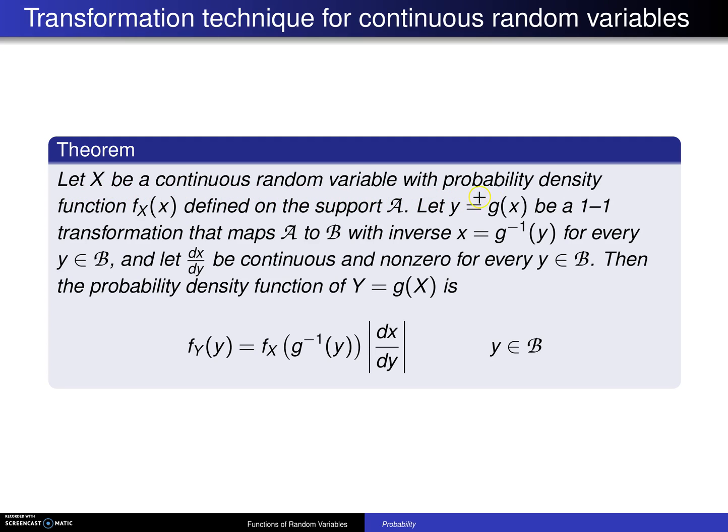Let X be a continuous random variable with probability density function f_X(x) defined on the support script A. Let Y = g(x) be a one-to-one transformation that maps script A to script B with an inverse x = g^(-1)(y) for every y element of B, and let dx/dy be continuous and nonzero for every y element of B.